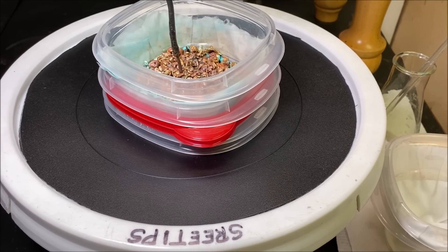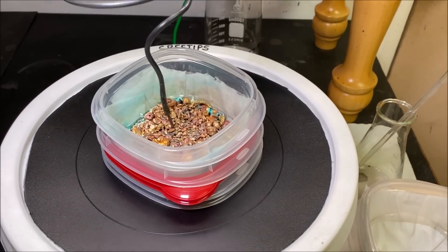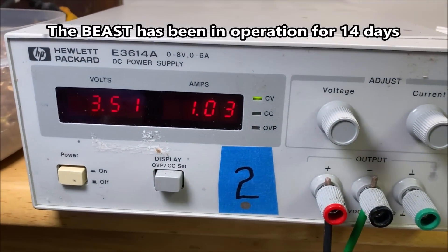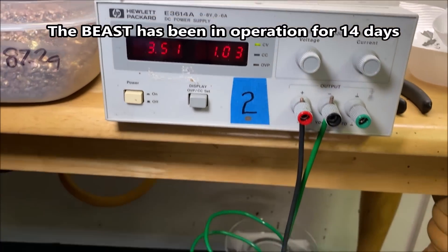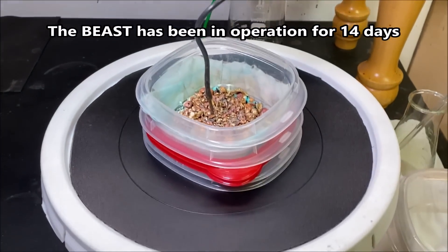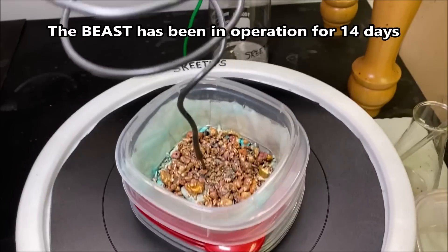Welcome back to my channel everyone, Street Tips here. This is my six liter silver cell, also known as the Beast. As you can see up here, the current flow has dropped way off, so I think it's because the anode filter is all clogged up with slimes.